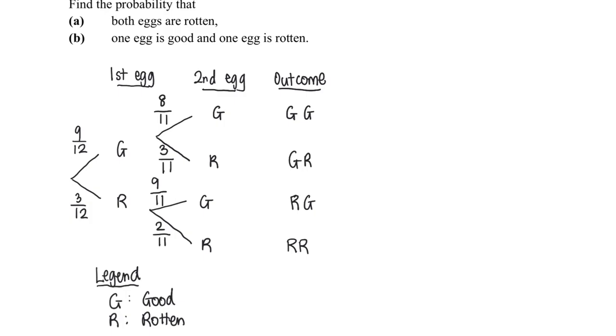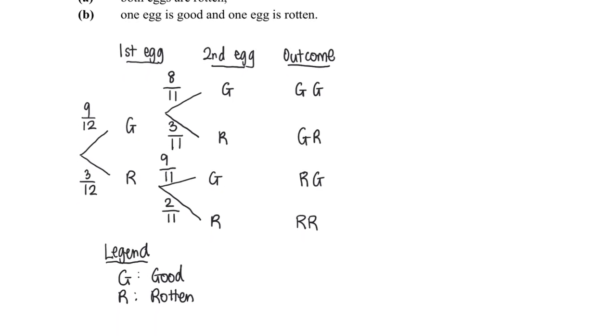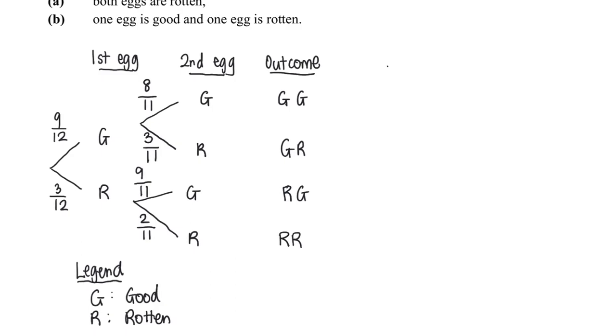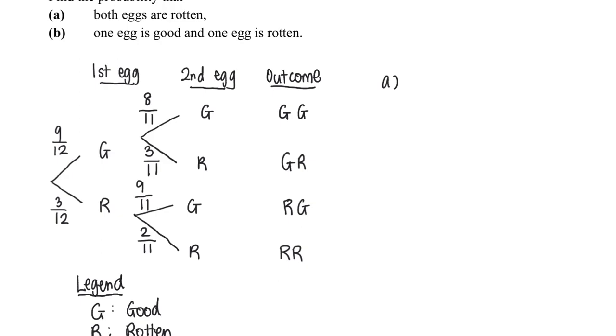So for part A, we are required to find that both eggs are rotten. Both eggs are rotten. This is the only possible outcome. And it follows this branch.